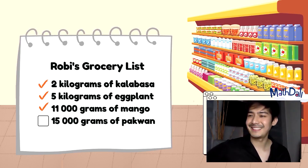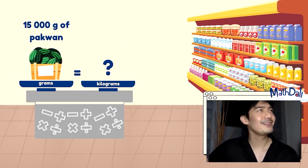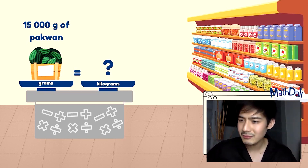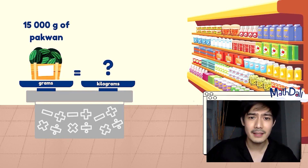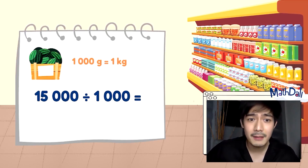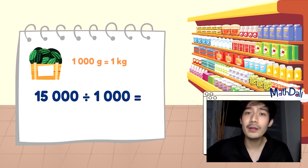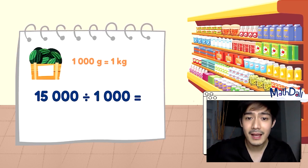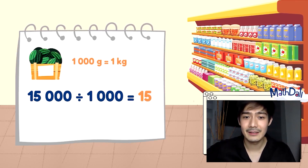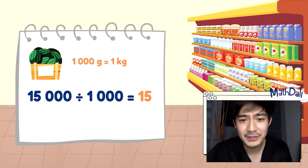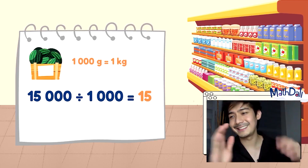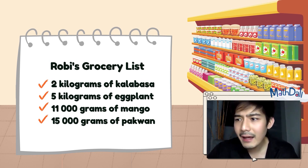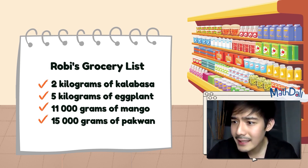Pakwan. Paano ulit mag-convert ng grams to kilograms? Divided by — dibay natin ang given na 15,000 by 1,000. Or we move 3 places going to the left sa ating 15,000, or cancel out the zeros, and makukuha natin ay 15. We get 15 kilograms of pakwan. Kita natin na meron tayo: pakwan, mangga, kalabasa, eggplant.